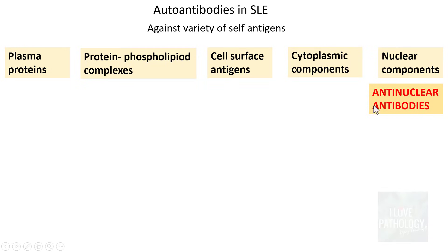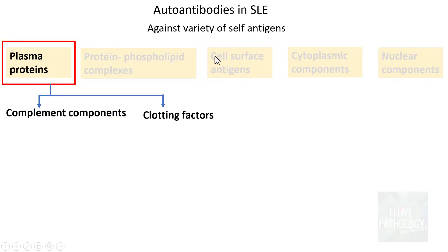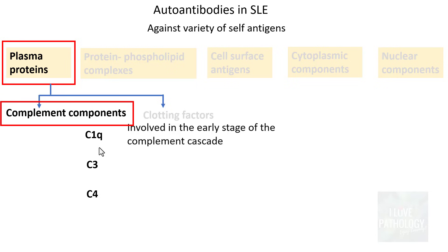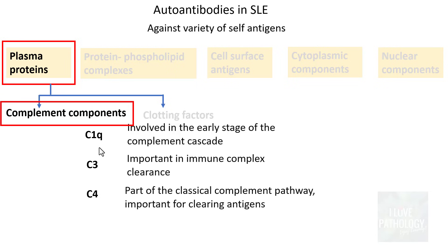Starting with plasma proteins: antibodies can develop against complement components — C1Q, C3, and C4. C1Q is involved in the early stage of the complement cascade, while C3 and C4 are part of immune complex clearance mechanisms. C4 is part of the classical complement pathway, which is important for clearing antigens. The complement system is meant for clearing unwanted immune complexes.